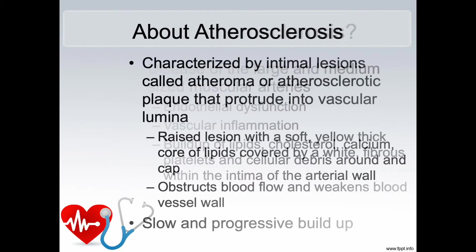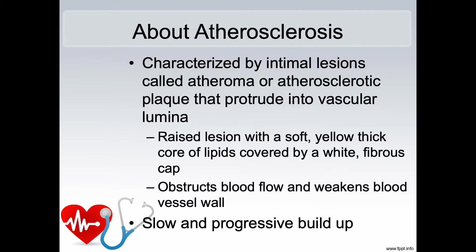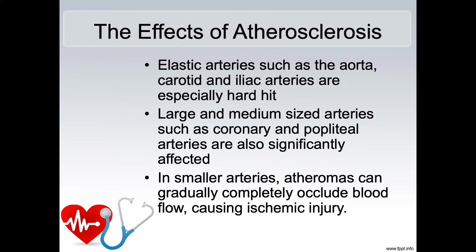Atherosclerosis is characterized by intimal lesions called atheroma or atherosclerotic plaque that protrude into the vascular lumina. They are raised lesions with a soft yellow thick core of lipids covered by a white fibrous cap, which obstructs blood flow and weakens the blood vessel wall. This is a slow and progressive buildup. The effects are primarily felt in elastic arteries such as the aorta, the carotid arteries, and the iliac arteries. Large and medium-sized arteries such as coronary and popliteal arteries are also significantly affected, and in smaller arteries the atheromas can gradually completely occlude blood flow, causing ischemic injury.